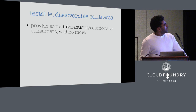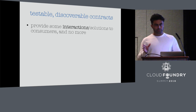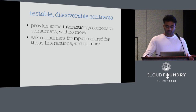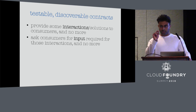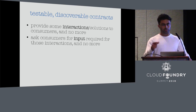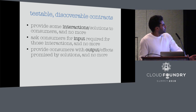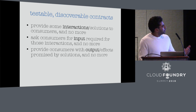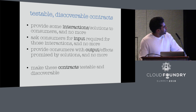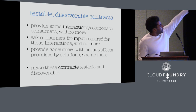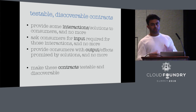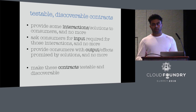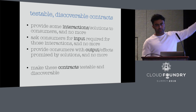It provides interactions that let you do what you're trying to do and nothing else. It asks the consumer for input required for those interactions and nothing more — just fill out this line and this line. Are you missing something? It'll tell you exactly what you're missing and where you can get that thing. And it provides the output the solution is supposed to provide and nothing else — don't confuse people with other noise. Everything here is a contract: the interaction I'm going to provide, the inputs you need to give me, and the output and side effects I'll create. What's key is the 'and no more' — make it clean and simple.